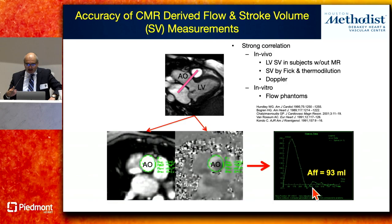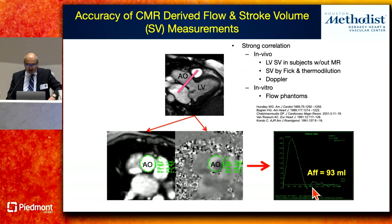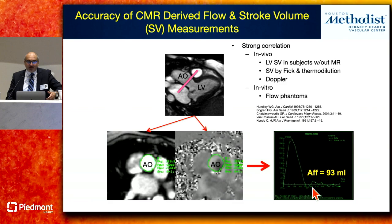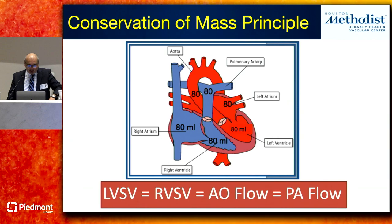This technique is available on almost all commercial post-processing software tools and has been very well validated both in vivo and in flow phantoms. Just like with echo, you can measure not just in the ascending aorta but also in the pulmonary artery, or really at any location by simply placing an imaging volume there.